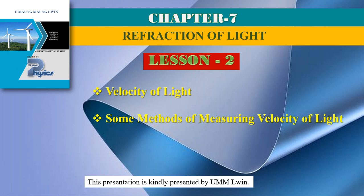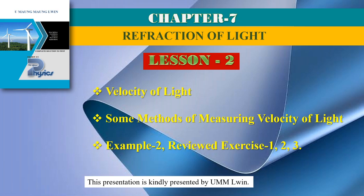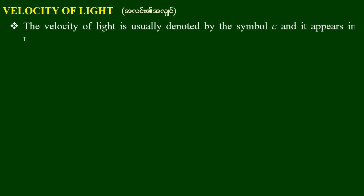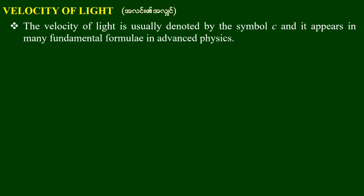Chapter 7. The velocity of light is usually denoted by the symbol C, and it appears in many fundamental formulas in advanced physics.